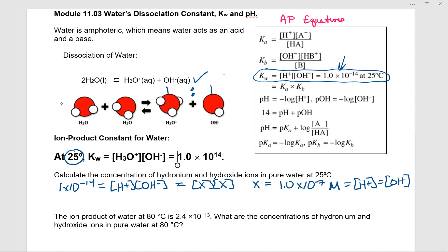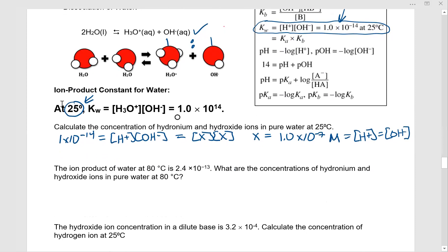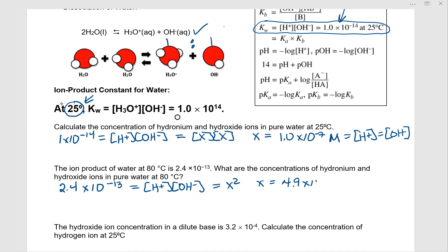The equilibrium constant changes as temperature changes. At 80°C, the ion product of water is 2.4×10⁻¹³. We set up the same equation: 2.4×10⁻¹³ = x², so x = 4.9×10⁻⁷ M, which equals both the hydronium ion concentration and the hydroxide ion concentration in pure water at 80°C.